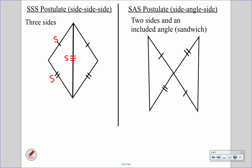The next one is SAS — side, angle, side — meaning two sides and an included angle. I call it 'the sandwich' because the angle is sandwiched in between those two sides. We have one congruent side and a second congruent side. We can also draw in vertical angles, which are congruent, giving us our angle. If you connect those two sides, the angle is included or sandwiched between them — that is your side, angle, side.